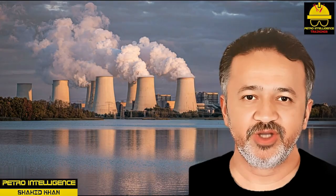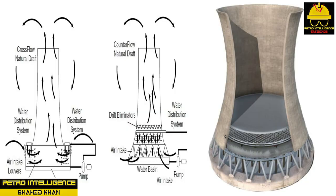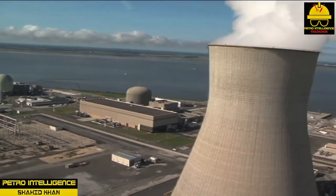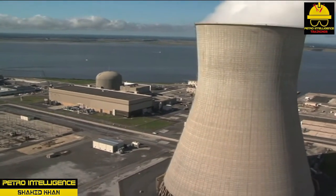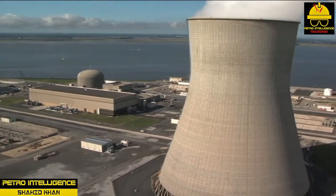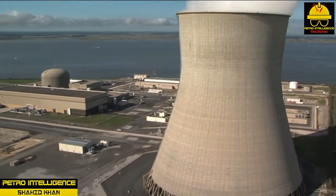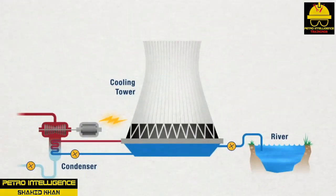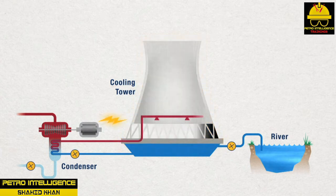Natural draft cooling tower: hyperbolic, or chimney, towers are natural draft towers that have a large stack or chimney. They are usually associated with power plant operation. Commercial towers are typically around 310 feet high with a lower diameter of 210 feet and a throat around 120 feet that gradually widens to 134 feet at the top.